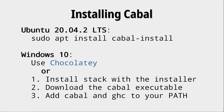Installing Cabal depends on the system you're using. If you're on Ubuntu, a simple package install via apt is sufficient. On Windows 10 it might be a bit more tricky — you could use a package manager, or you could install Stack, which is another application, then download the Cabal executable and add Cabal and GHC to your path. There are different ways of installing the software, which is why I have linked to resources in the video description below.